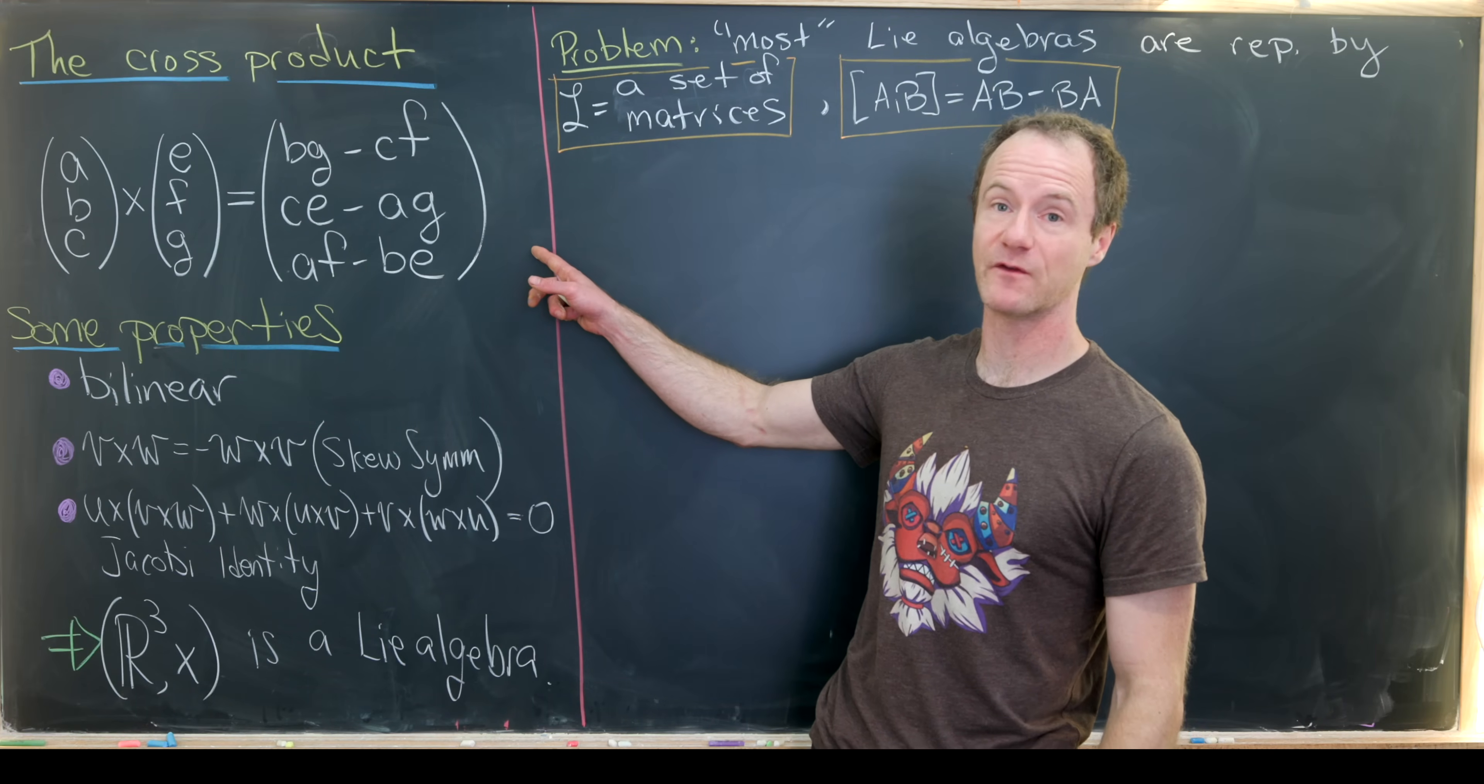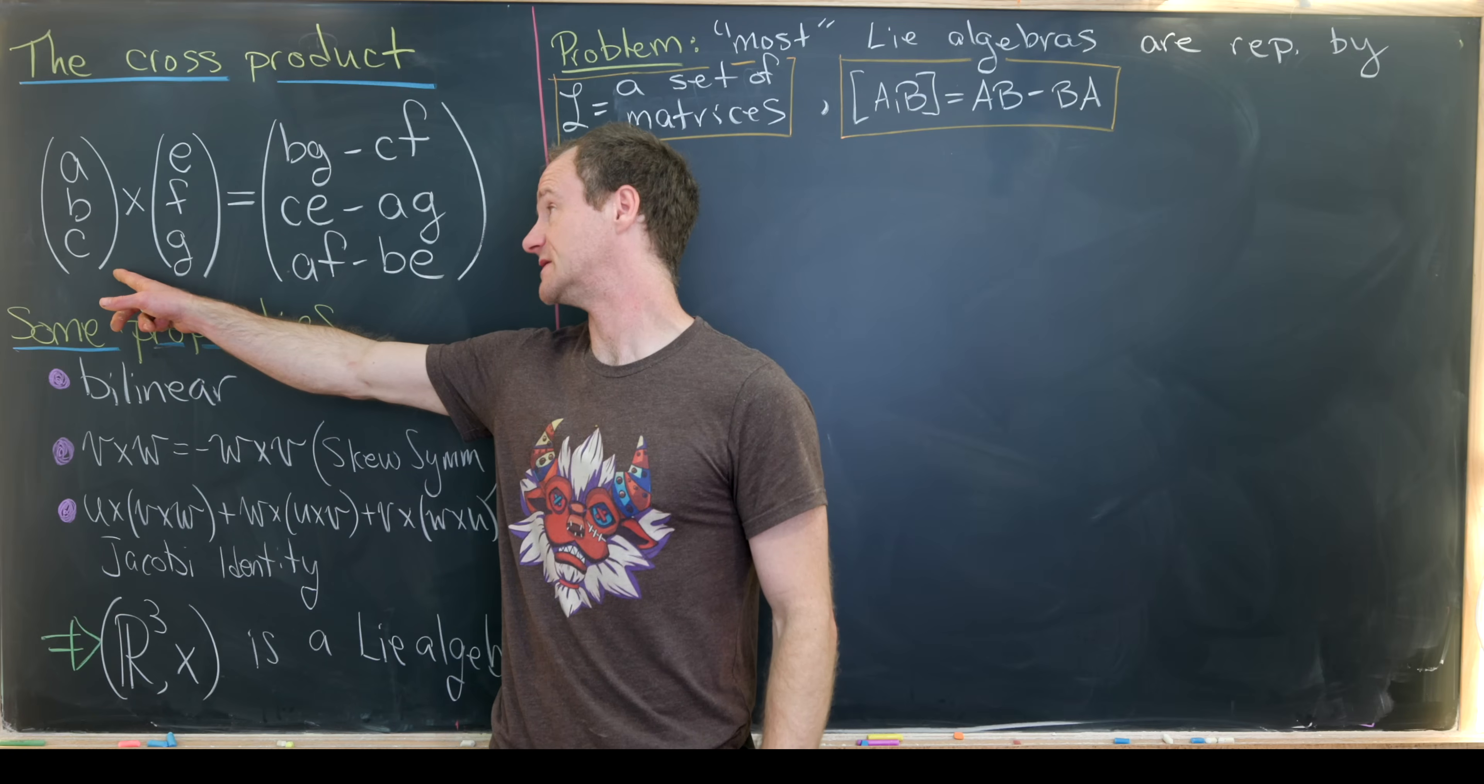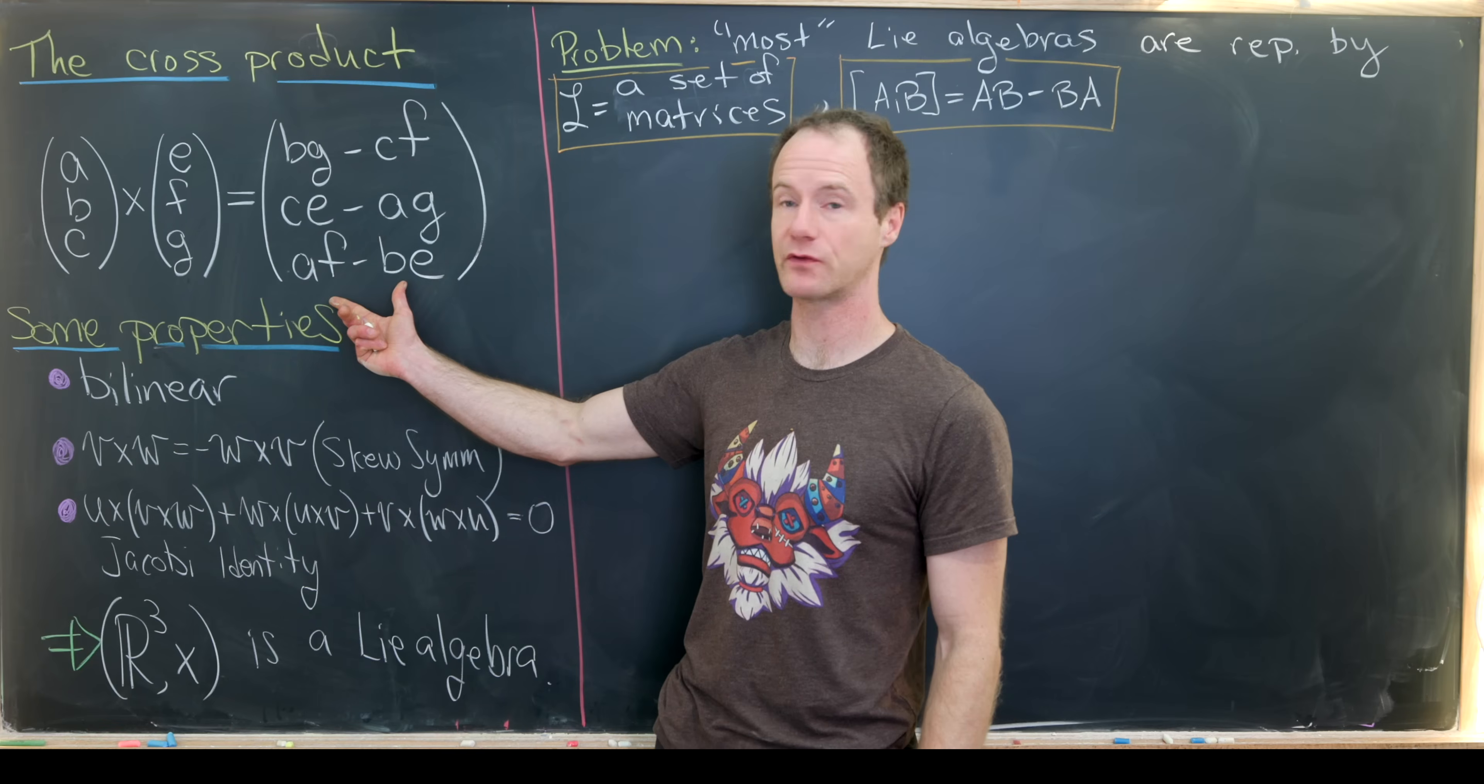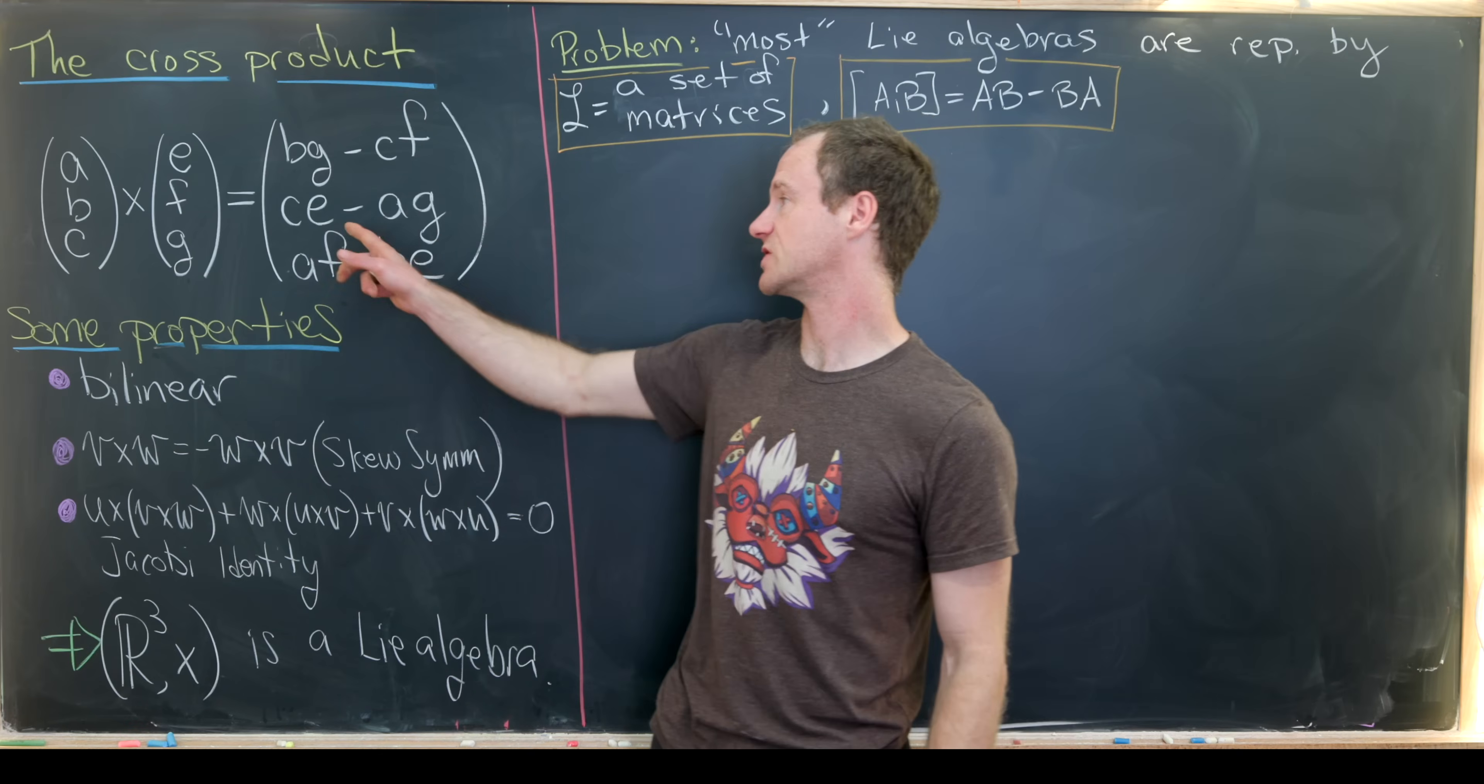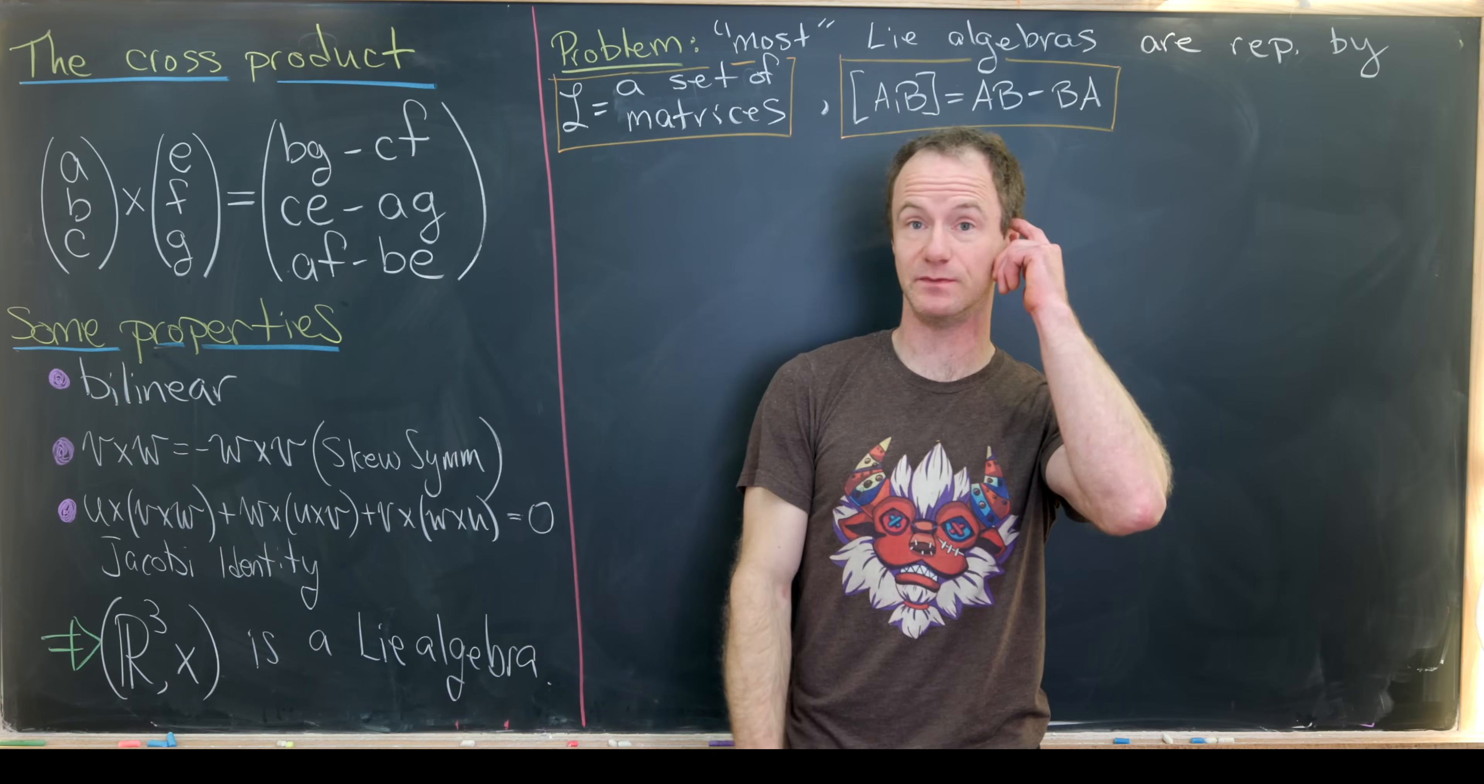Algebraically, we have the following formulation. So this three-dimensional vector ABC cross with this three-dimensional vector EFG is equal to this new three-dimensional vector. So notice the first entry is BG minus CF. The second entry is CE minus AG. And the third entry is AF minus BE.